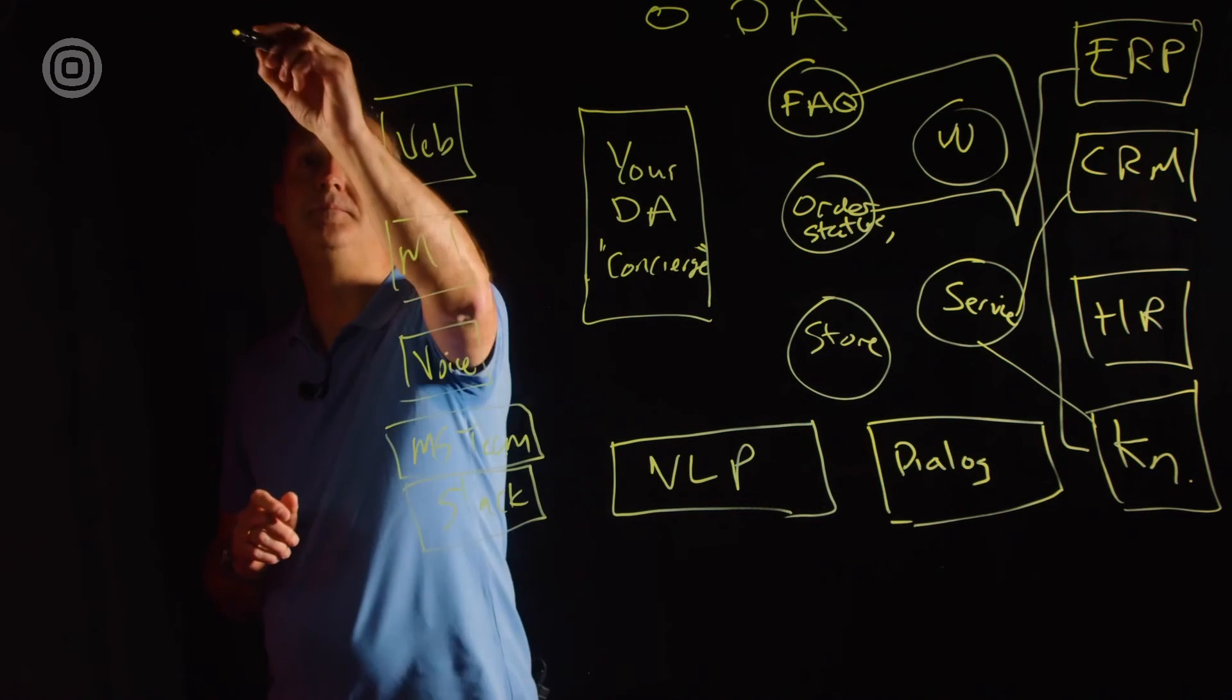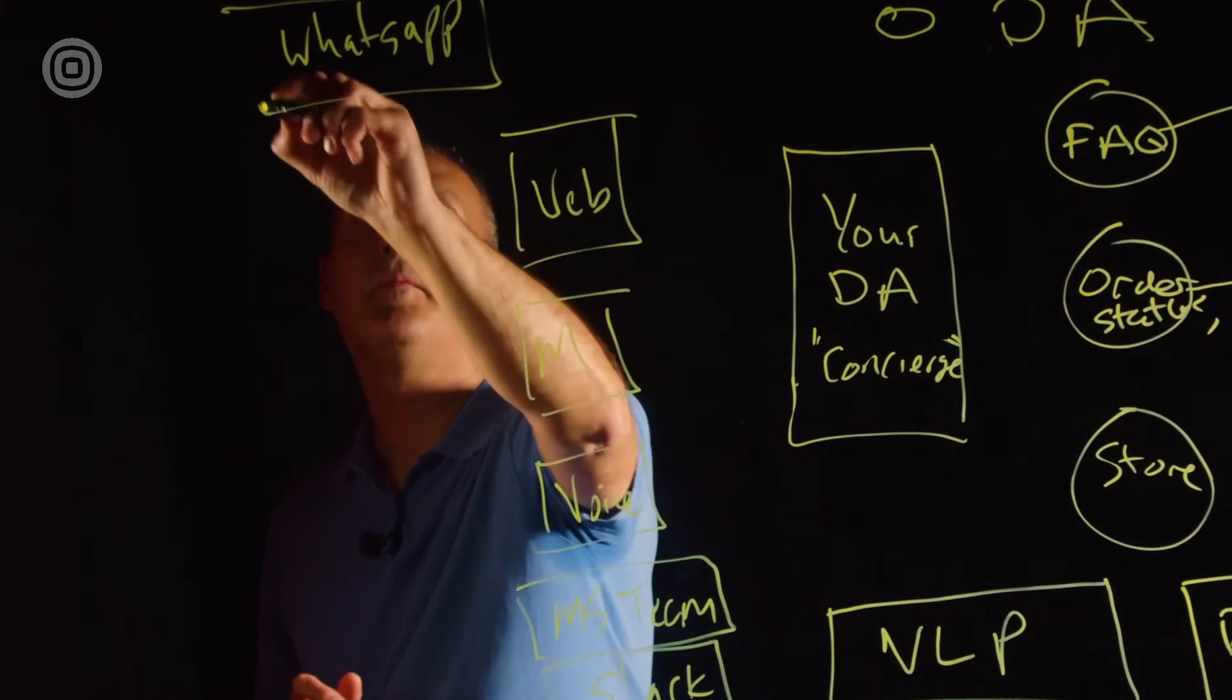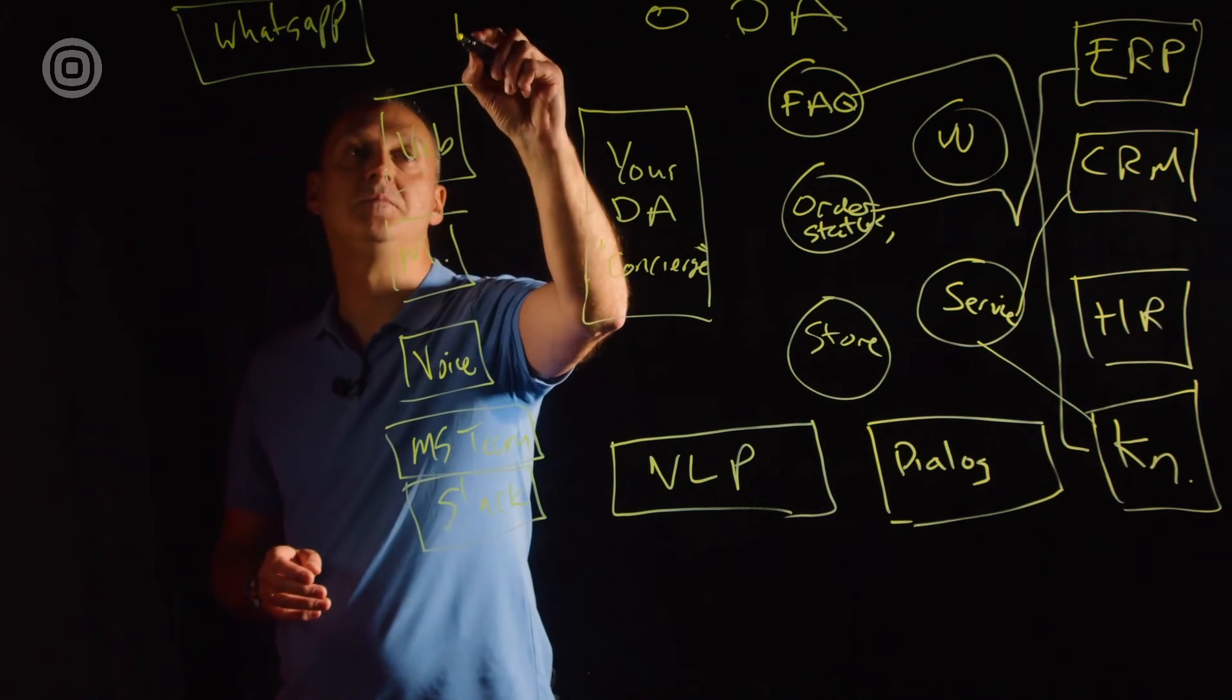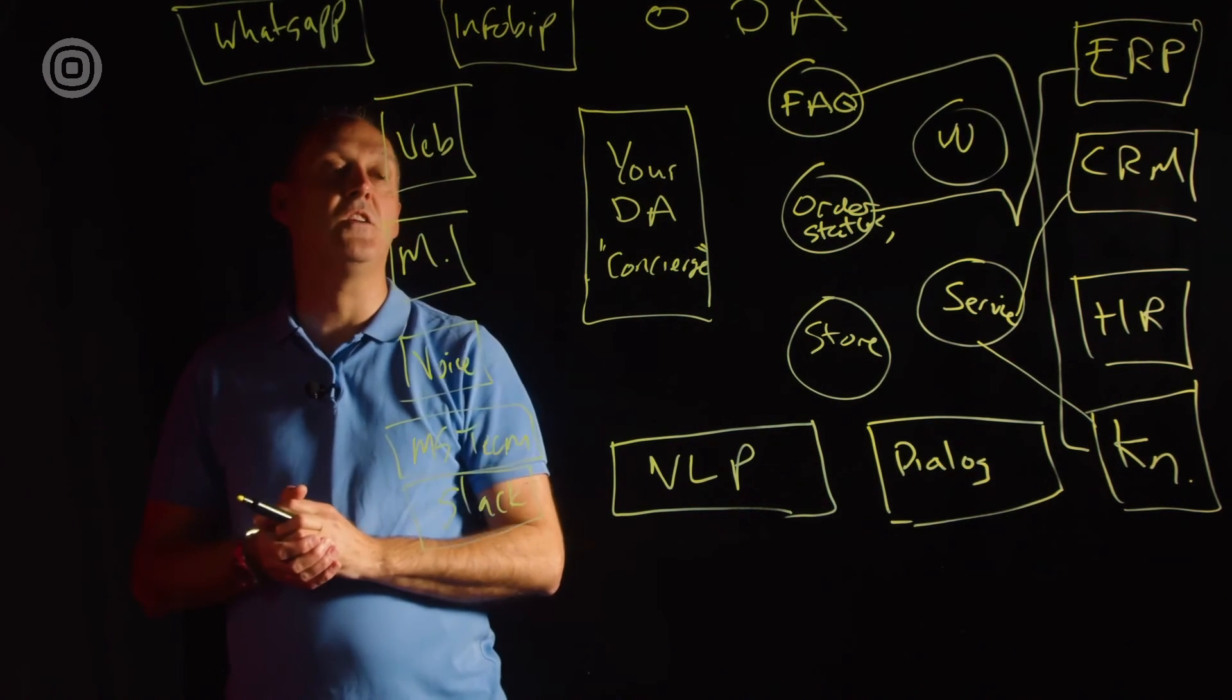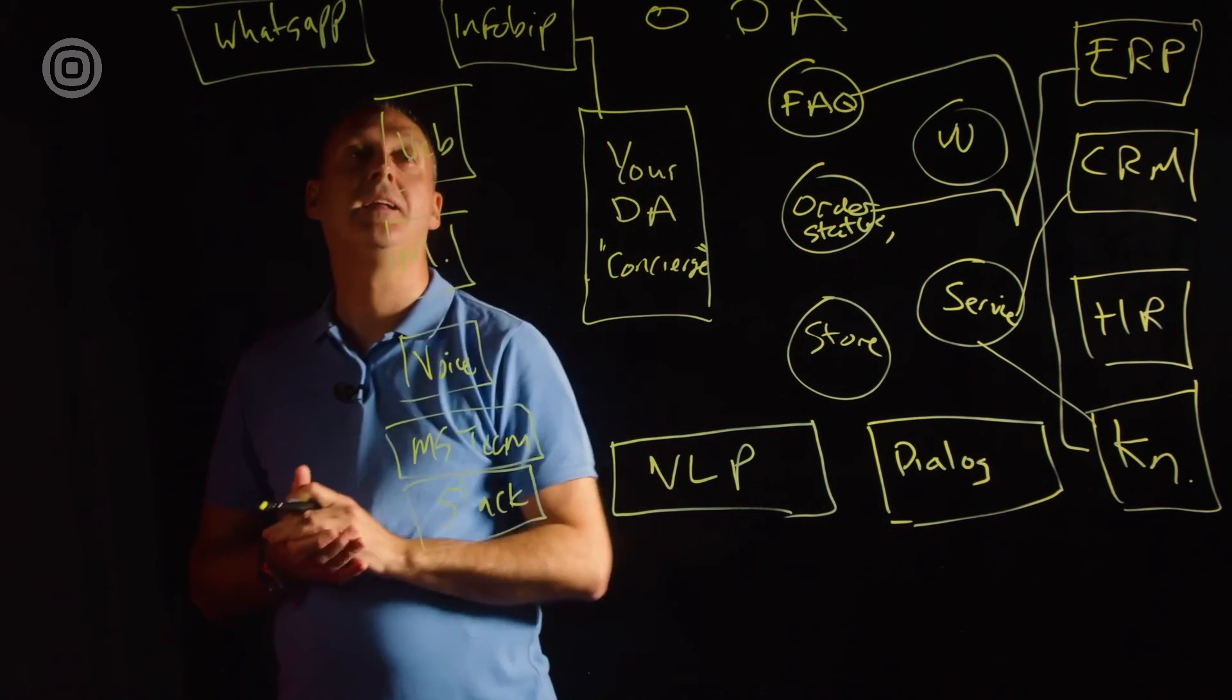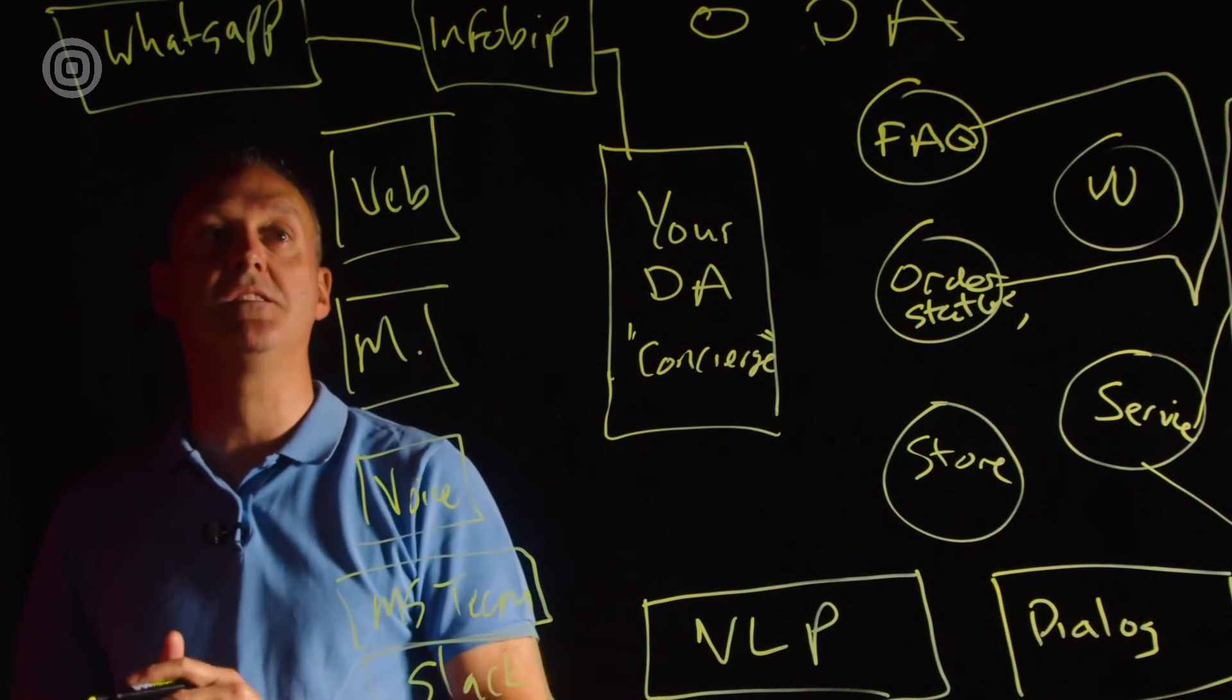Now for WhatsApp. We work with our partner, InfoBip. So you create a channel within your digital assistant for InfoBip. And then InfoBip handles all the connection to WhatsApp and Meta and the WhatsApp for Business service.